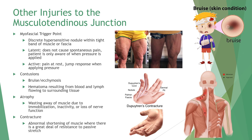A latent trigger point does not cause spontaneous pain but may restrict movement or cause muscle weakness; many individuals only become aware of it when pressure is applied. An active trigger point causes pain at rest, and applying pressure increases the pain, often resulting in a jump sign — indicating the patient is trying to get away from the clinician. Active trigger points are tender to palpation with referred pain and are found most commonly in muscles involved in postural support, such as the upper and lower back.